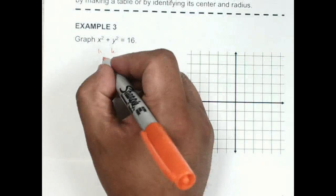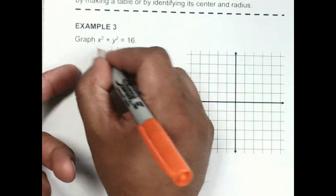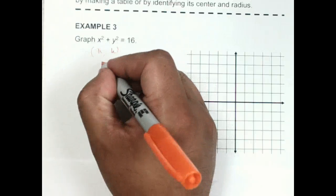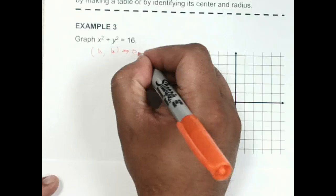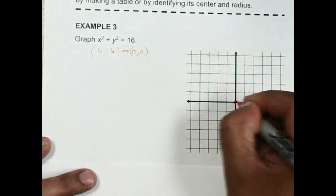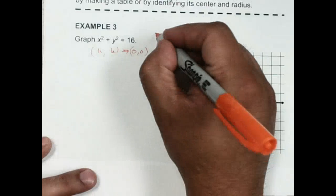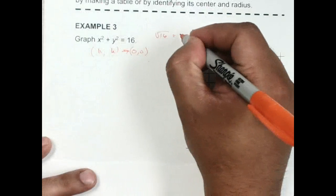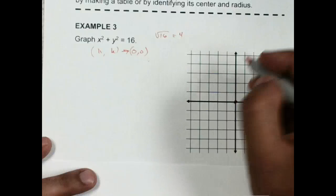You don't have an h and k. Really you do, but it's not showing. If the h and k don't appear here, that just tells you that your h and k is going to be (0, 0). So you're at the origin. And then what's the square root of 16? It's going to be 4. So your radius is 4.